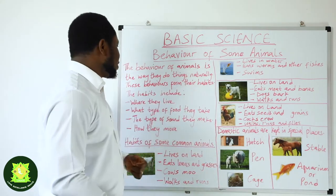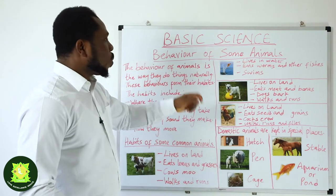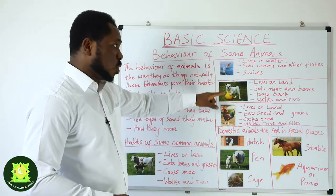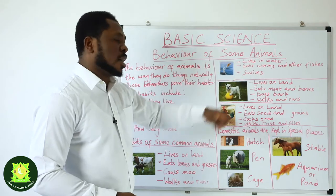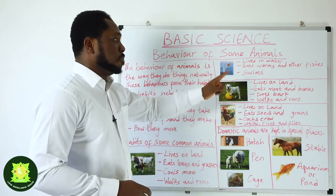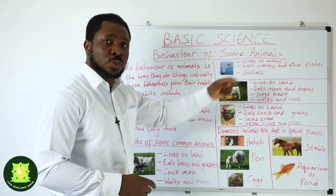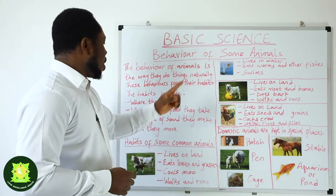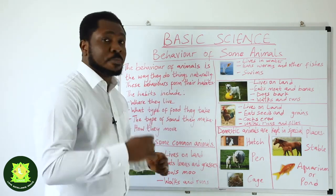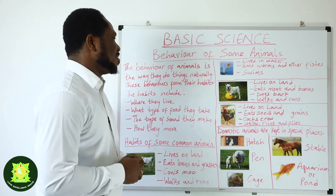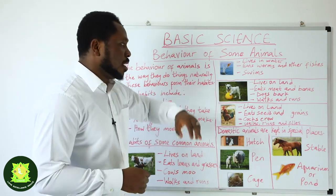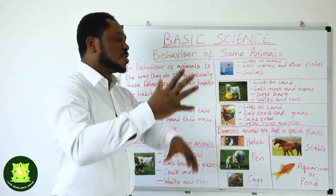Now let us talk about the dog. Where do they live? Unlike fish that live in water, dogs live on land. What do they eat? Dogs eat meat and bones. What sound do they make? Dogs bark. And how do they move? Because they have four legs, they walk and run.